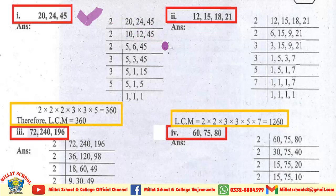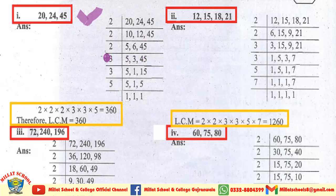45، 2 کے table میں نہیں آتا، اس لیے اس کو ہم as it is لکھیں گے۔ Next ہم 2 پر divide کریں گے: 2×5=10، 2×6=12، اور 45 as it is لکھیں گے۔